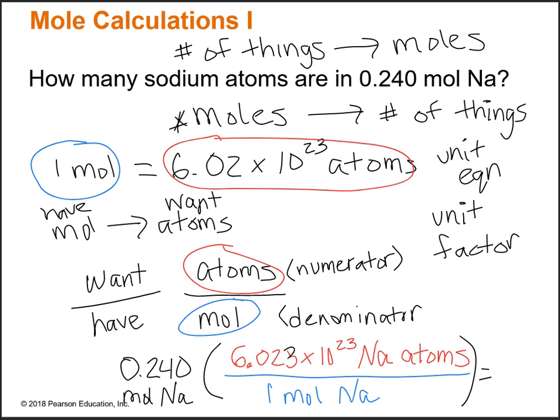What you have to do is take your given value — 0.240 moles of sodium — and multiply by your unit factor. You're going to take 0.240 and multiply by 6.02 times 10 to the 23rd. Try that in your calculator, because you're going to have to remember how to do exponents. When you get an answer, you can put it in the chat box.